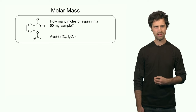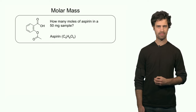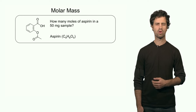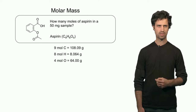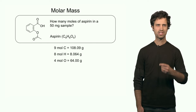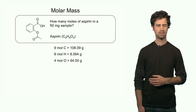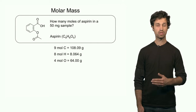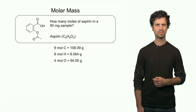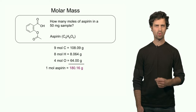From this formula I can calculate the molar mass, and if I know the molar mass, I can calculate how many moles of aspirin I have in a 50-milligram sample. The first step is to determine the molar mass. One mole of aspirin contains 9 moles of carbon — that is 9 times 12. It contains 8 moles of hydrogen — that is 8 times 1.008. It also contains 4 moles of oxygen — that is 4 times 16 grams. Adding up all these contributions, the molar mass of aspirin is 180.16 grams.